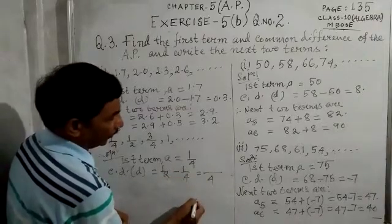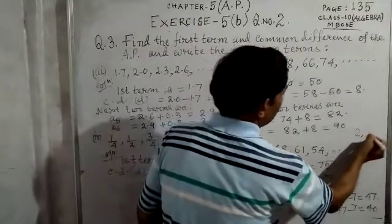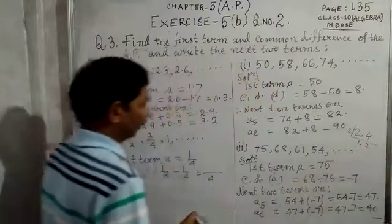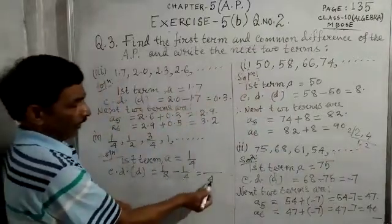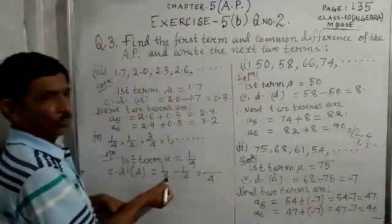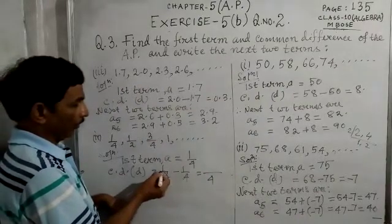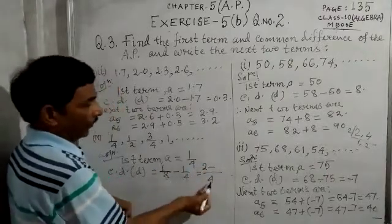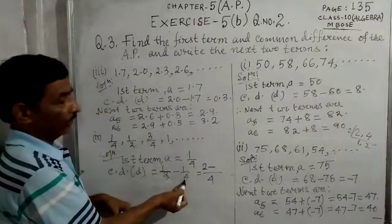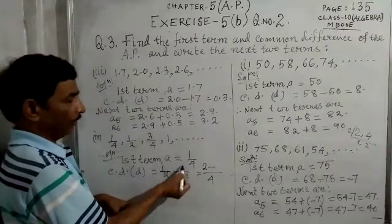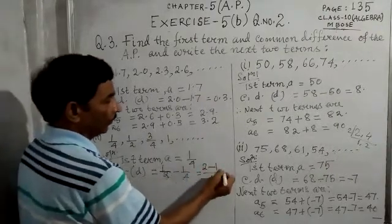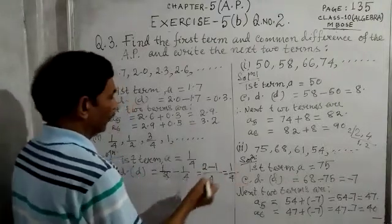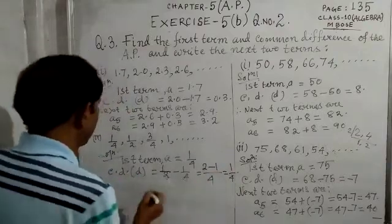Divide 4 by 2 to get 2, multiply by numerator 1 to get 2. Then divide 4 by 4 to get 1, multiply by numerator 1 to get 1. So D equals 2 minus 1 over 4, which is 1 by 4. Now we write the next two terms.